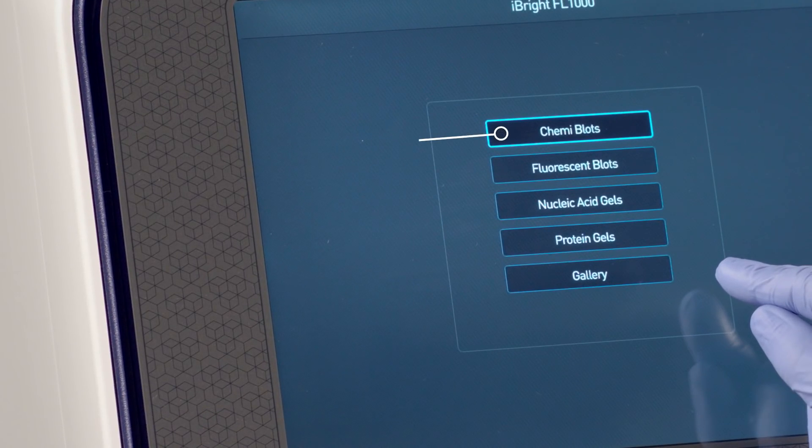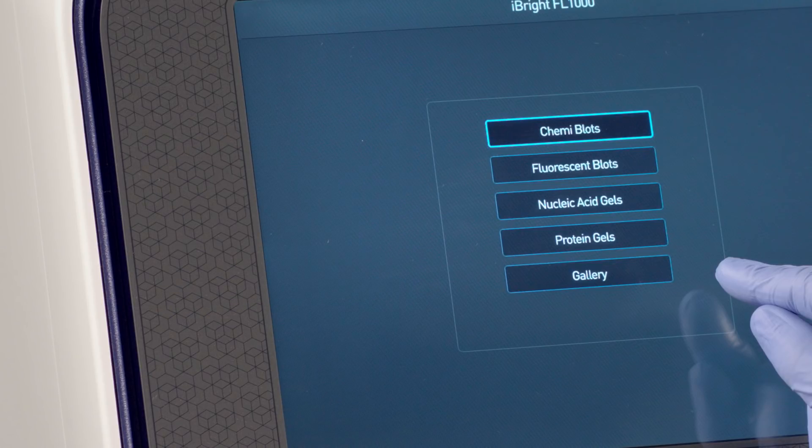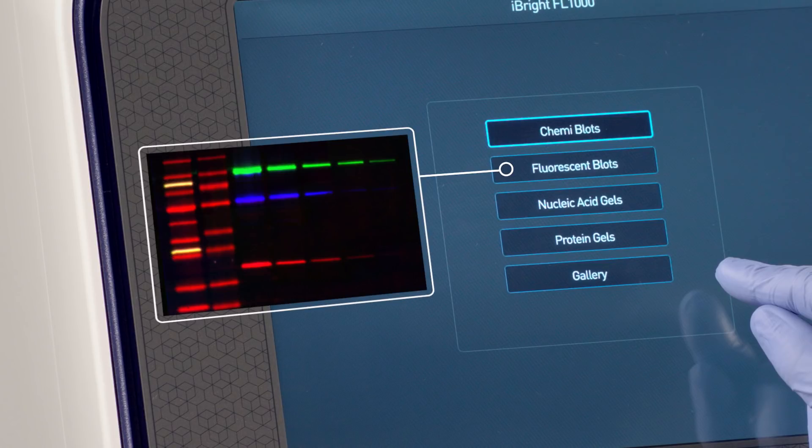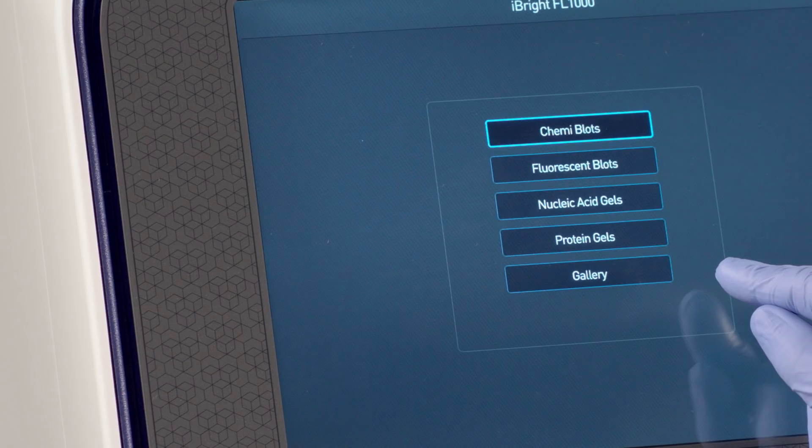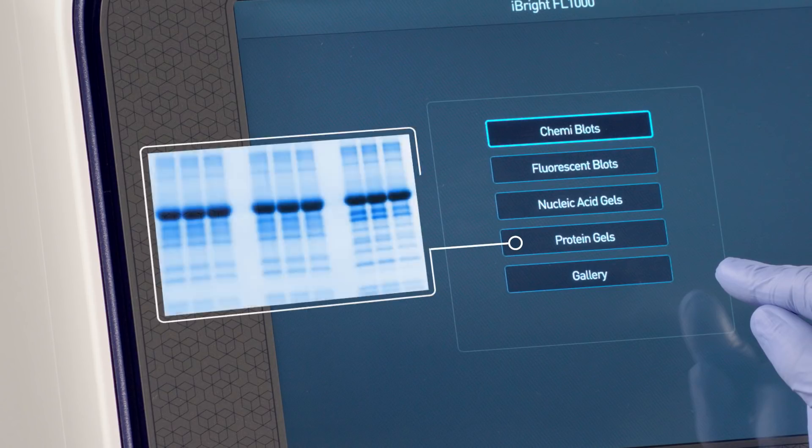Choose chemiblots for imaging Western blots probed with HRP or AP conjugated antibodies, fluorescent blots for Western blots probed with fluorescent conjugated antibodies, nucleic acid gels for DNA and RNA gels, or protein gels for visible stained protein gels.